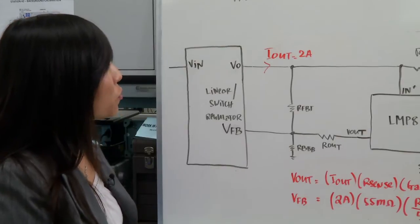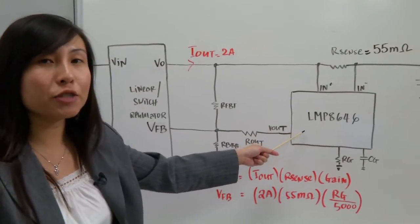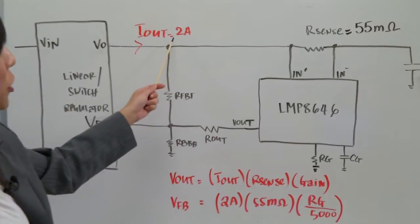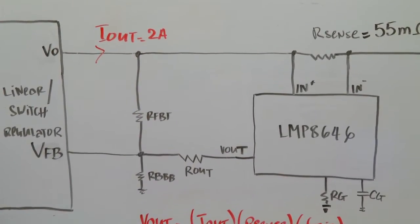In this case we will have a circuit such as the LMP8646 in order to monitor the output current, in order to make sure it never exceeds this 2.1 amps. So let's see how that works.